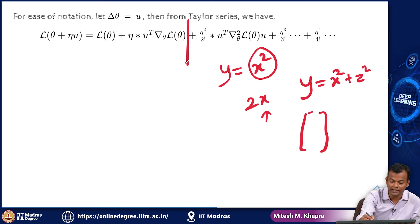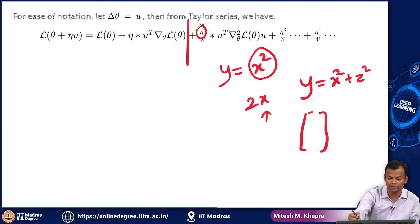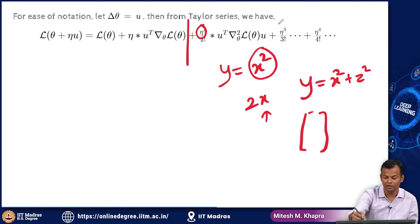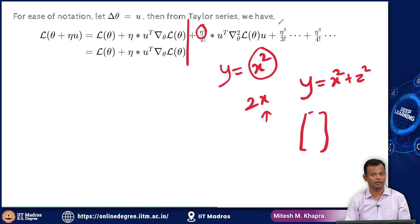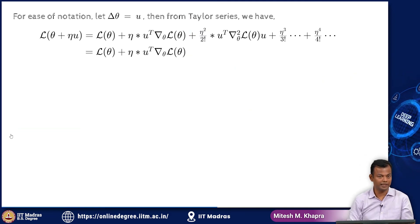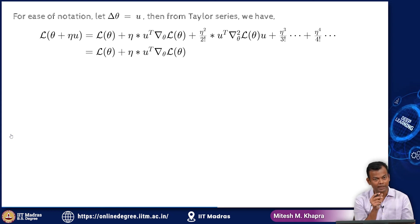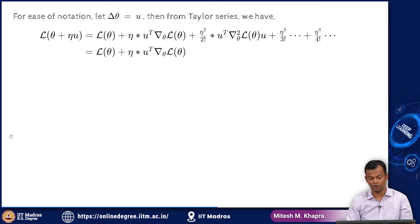I am going to draw the line at the linear approximation. My argument is that eta is small, so eta squared is going to be even smaller — hence I can ignore that. Eta cubed would be even smaller, so all of those terms I can ignore. Since eta is small, I am just going to cut the formula here and use the linear approximation. We have seen previously that when eta is small, a linear approximation is good enough.